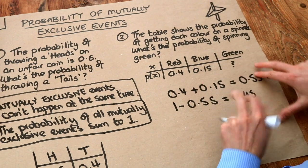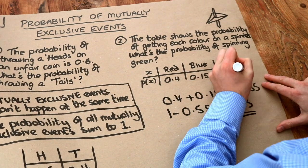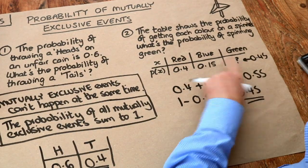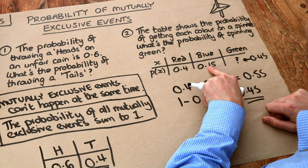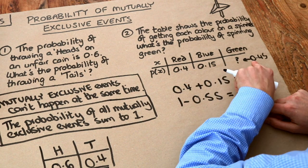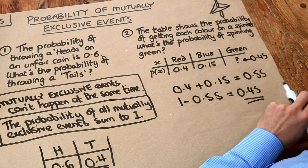So that means this mystery probability here is 0.45. If we just check, if we add these up: 0.4 plus 0.15 is 0.55, plus 0.45, they add up to one. So that is correct.